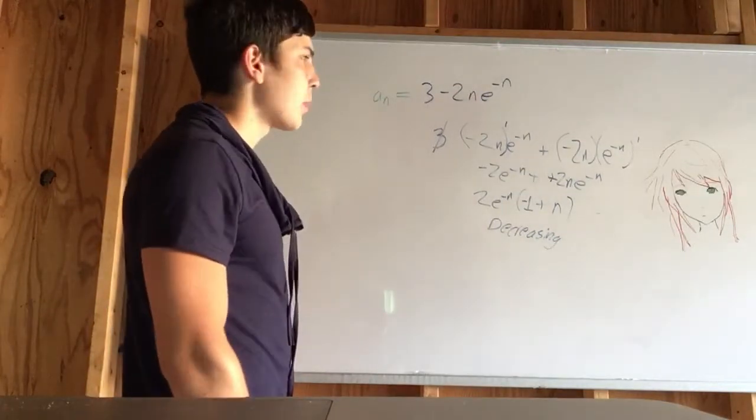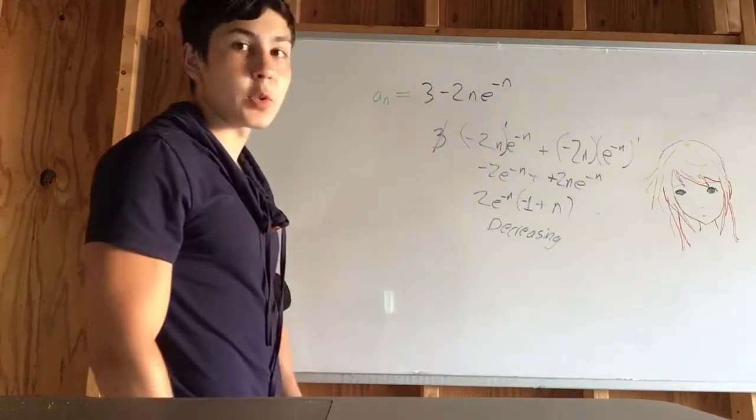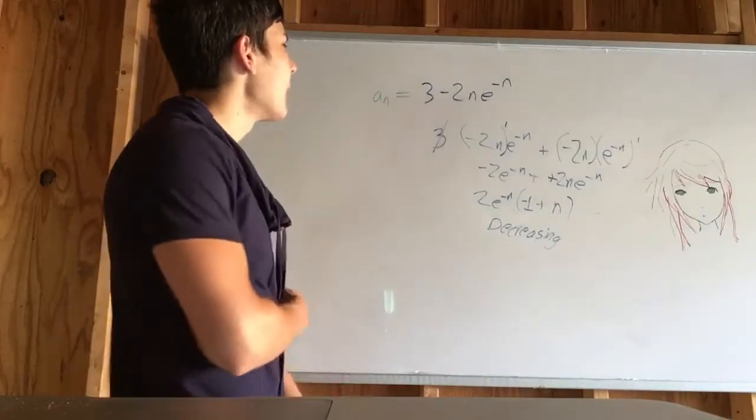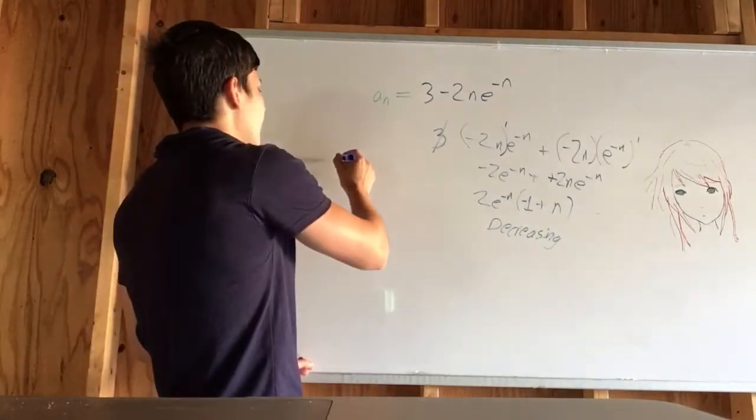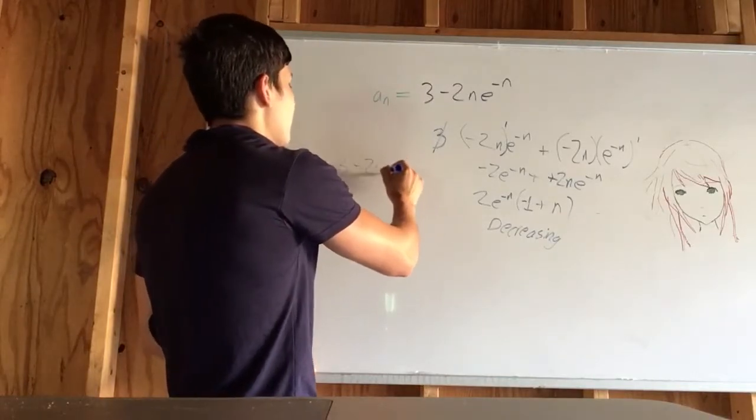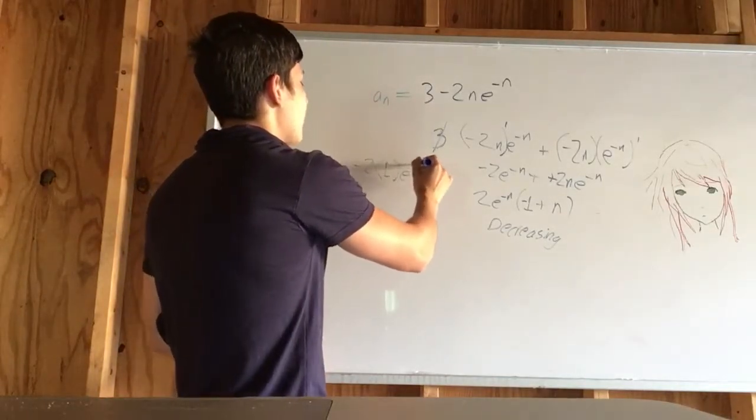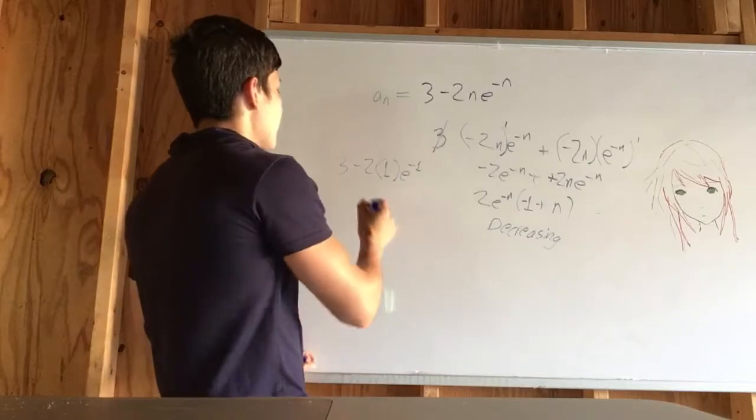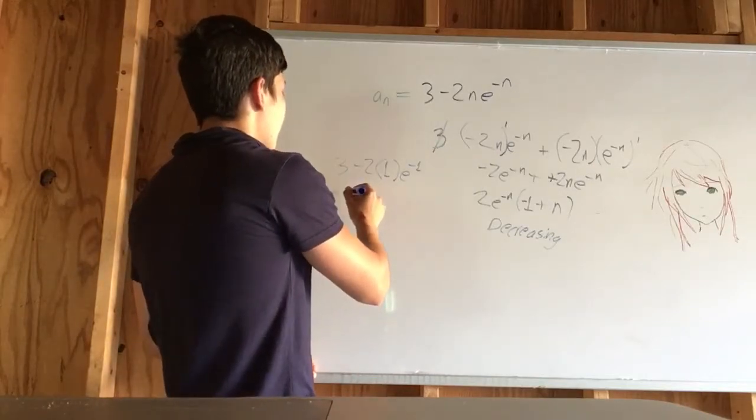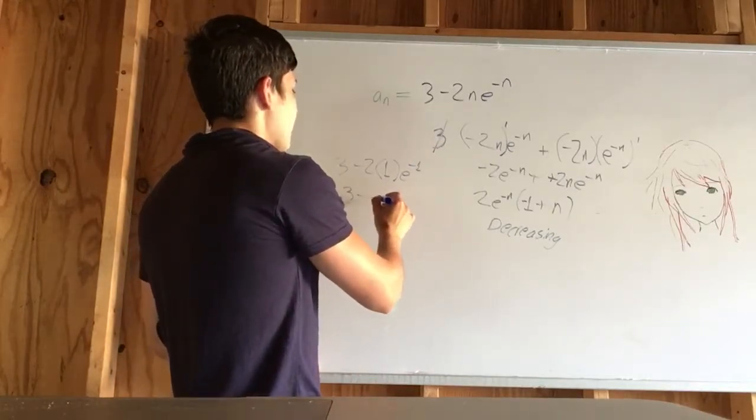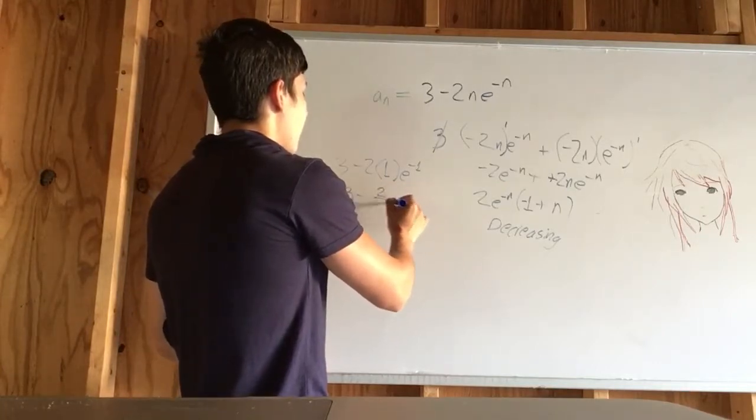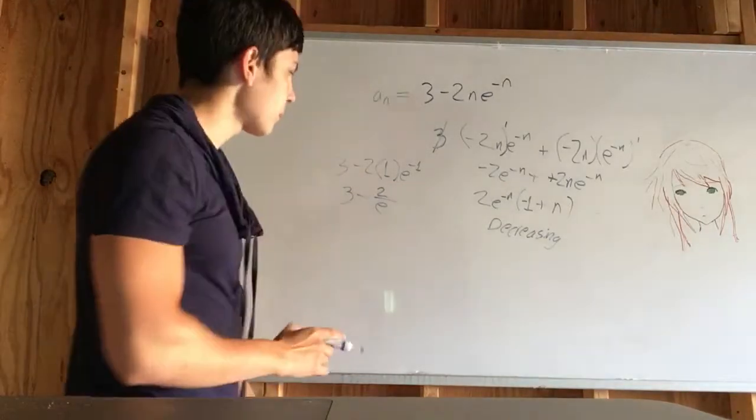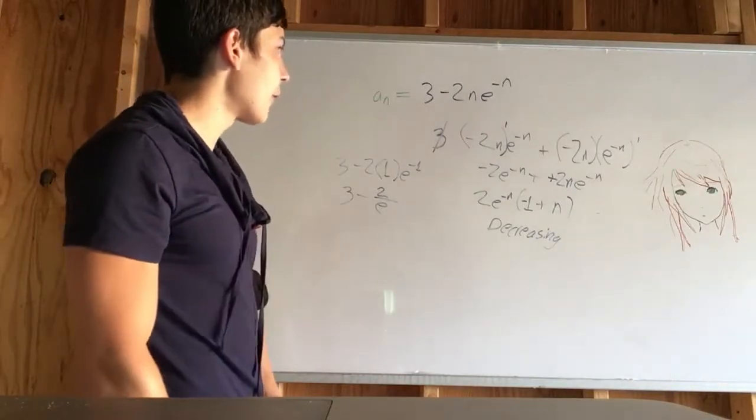Is it bounded? So let's plug in the first term of the sequence, which is always 1. If you plug in the first term of the sequence, you get 3 minus 2 times 1, e to the negative 1. So this would give you 3 minus 2 over e.